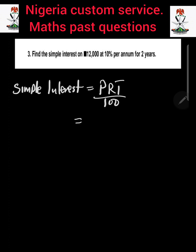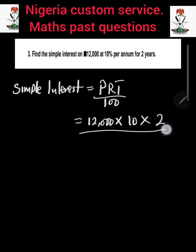The principal is the actual money, which is 12,000 naira. So our principal is 12,000. Then we multiply by the rate, which is 10%. So multiply by 10. Then multiply by time — per annum for two years, so the time is 2. Multiply by 2, then everything over 100.